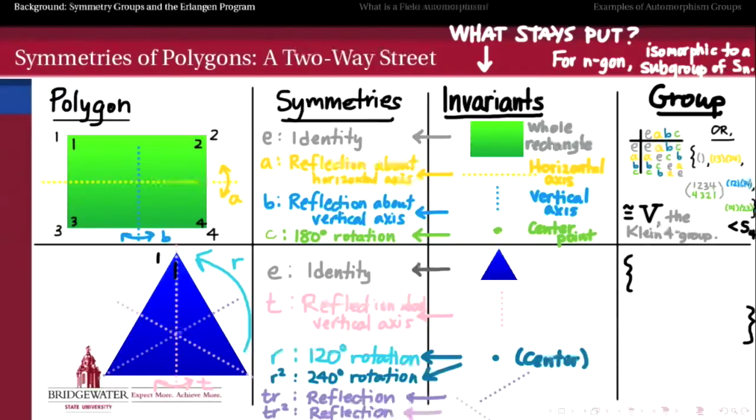For the equilateral triangle, if we list all of those elements of the symmetric group which correspond to these symmetries, again, numbering the vertices like 1, 2, 3 for example, we find out that the identity, again, doesn't move any of my vertices. The reflection about the vertical axis flip-flops what I labeled 2 and 3. The 120-degree rotation corresponds to the 3 cycle, 1, 2, 3, because 1 goes to 2, 2 goes to 3, and 3 goes to 1. The 240-degree rotation to 1, 3, 2. The TR reflection is 1, 3, and the TR-squared reflection is 1, 2. And all six of these operations are different.